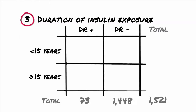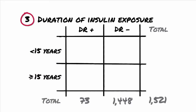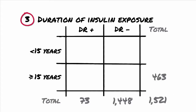In our third and final example, we look at the risk factor — duration of insulin exposure. We will use 15 years or more for our exposed participants versus less than 15 years for the unexposed participants. Again, it is helpful to draw a 2x2 table, and the numbers are not the same as for the previous calculations. Of the 1,521 participants, 463 have taken insulin for 15 years or more; 50 of these developed DR and 413 did not.